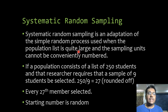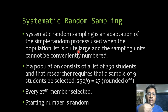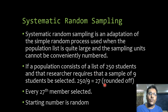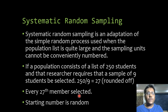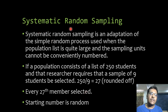In systematic random sampling, we start with one random number and then select every nth interval. For example, with 250 students and a desired sample of 9, we divide 250 by 9 to get an interval of approximately 27. If the first number selected is 3, then we select the 30th, 57th, 84th member, and so on. This is a very convenient way of sampling.